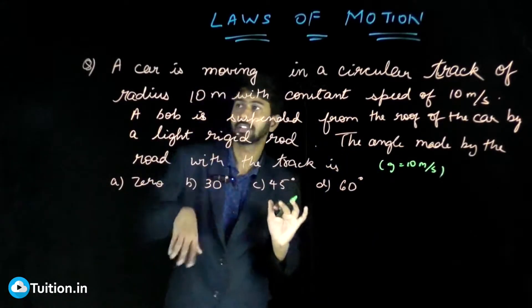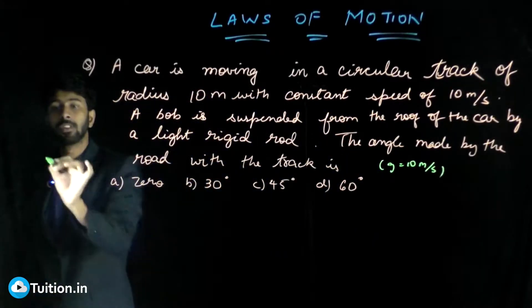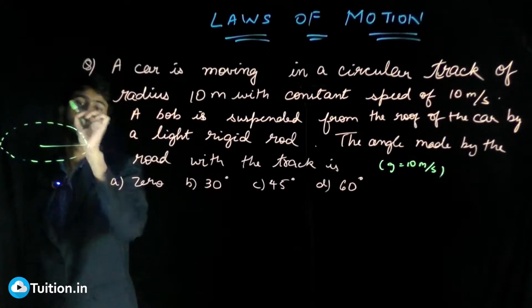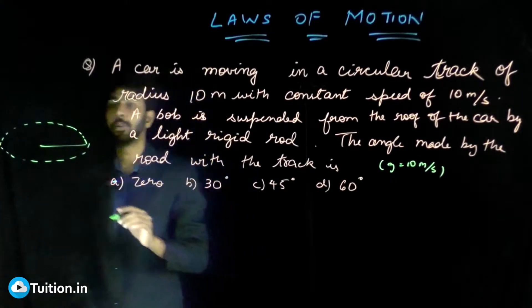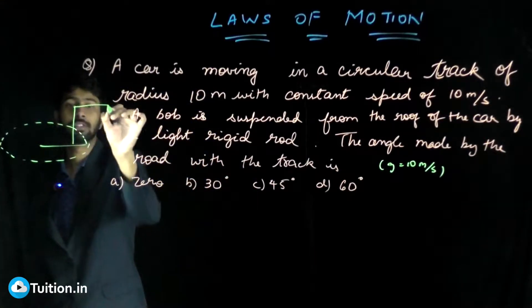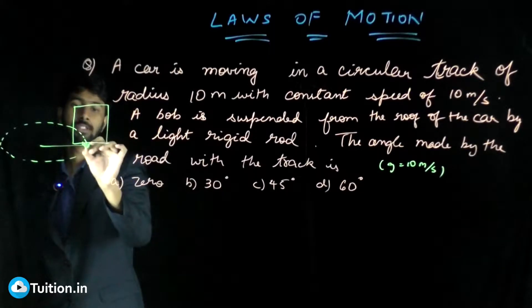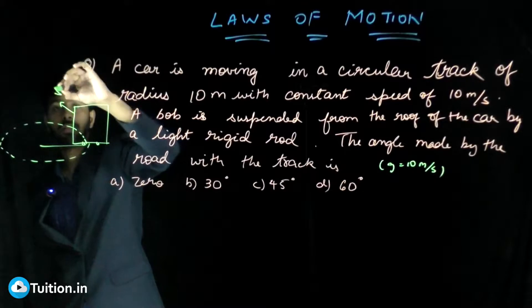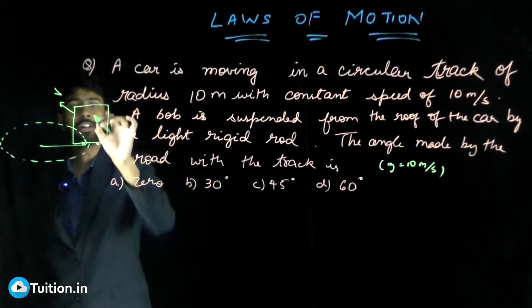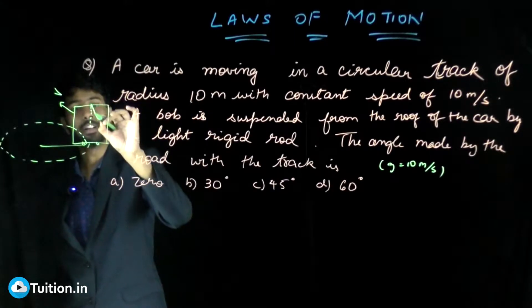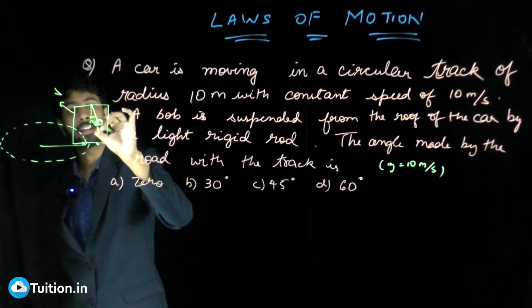Let's draw the diagram and understand the problem. So let this be your track. In this track you have a car which is moving. Let me draw the car as a box with wheels. It's moving in this manner with a constant speed V. Inside this you have a bob which is suspended, and this bob is making some angle theta.